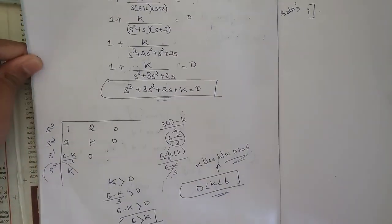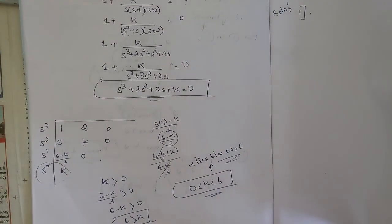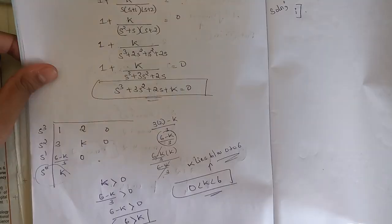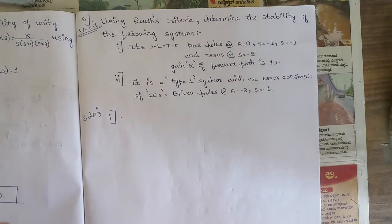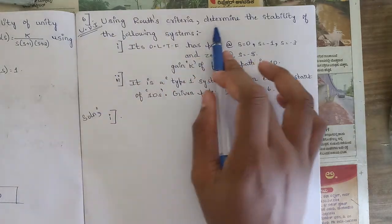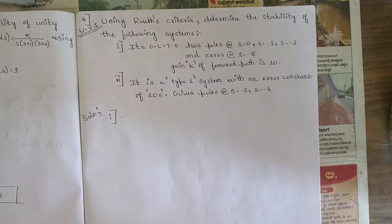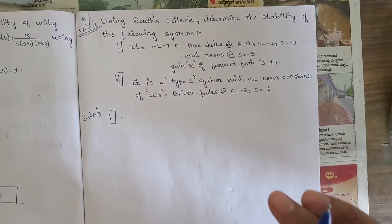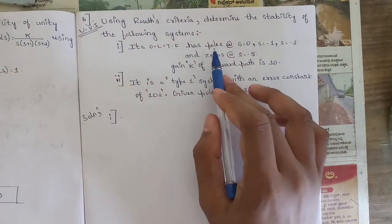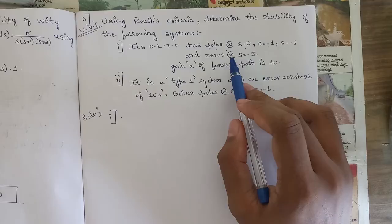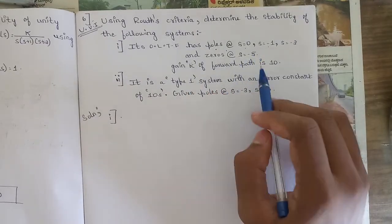That was the simple model paper problem. Now let's get to the very important last problem of this concept — mark it as very important. Using Routh's criterion, determine the stability of the following systems. In the first sub-question, the open loop transfer function has poles at s = 0, s = −1, and s = −3, zeros at s = −5, and the forward path gain K = 10.